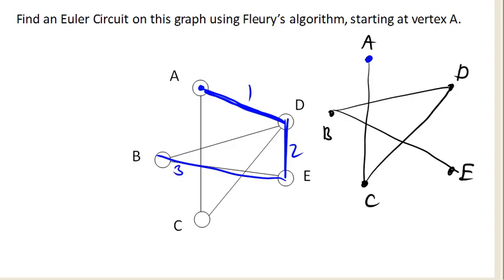And then from B, there's only one route we can follow, and that's to D. And then from D, there's only one route we can follow to C. And from C, there's only one route we can follow back to A, and there is our Euler circuit.